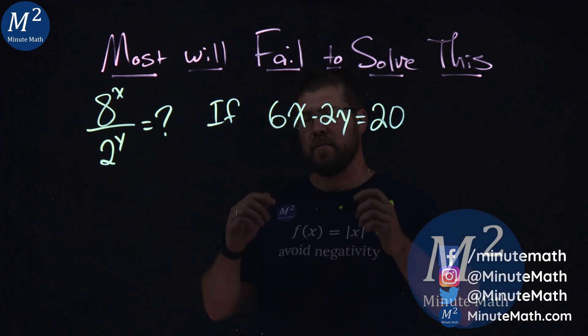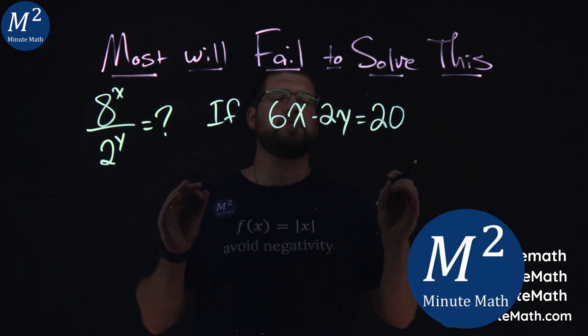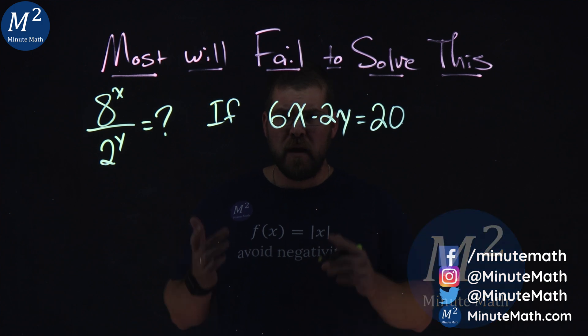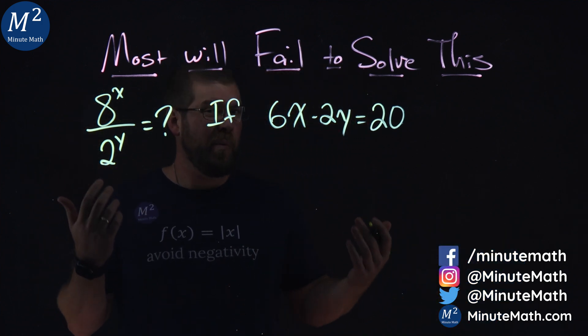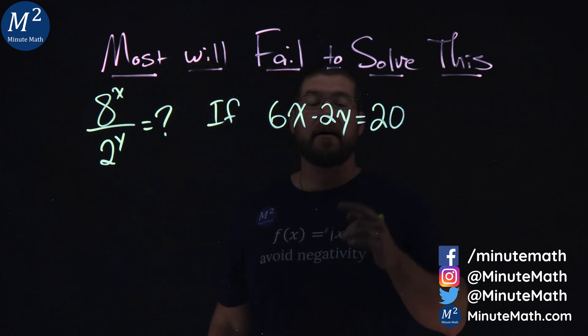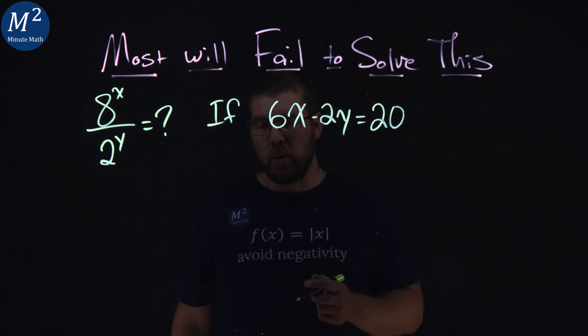Hi, I'm Sean Gien, and this is Minute Math, and most will fail to solve this problem. The problem is this: 8 to the x over 2 to the y is equal to what if 6x minus 2y equals 20?